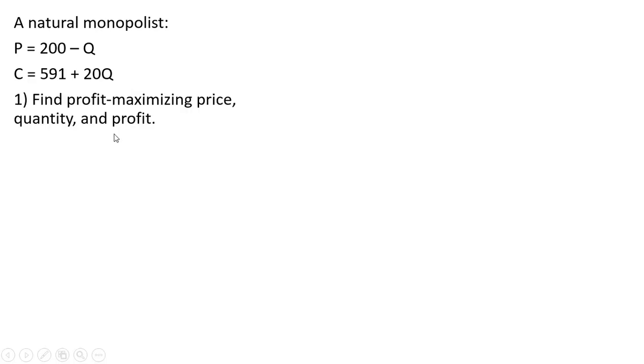We want to find the profit maximizing price, quantity, and profit, and then we're going to get into the regulation part. Profit is revenues minus cost. Revenue is price times quantity, so price is 200 minus Q multiplied by Q, and then I subtract out the cost equation.